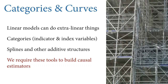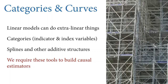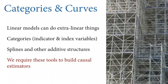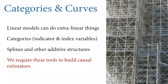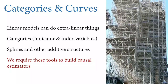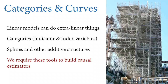The new statistical tools in this lecture are categorical variables and curves. Linear models can handle both, even though neither is linear. Categories are discrete, and they usually show up in data tables as indicator or index variables. There are lots of ways to draw curves with linear models — I'm going to talk about splines, but there are many other kinds of additive structures, fundamentally built up of little lines, that can make nonlinear structures. These tools give us the conditioning and stratification we need to get at the estimates we desire.